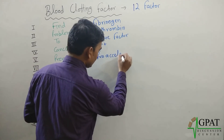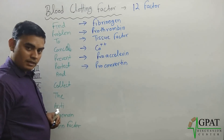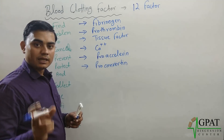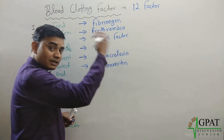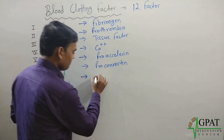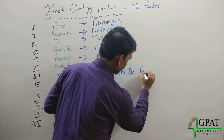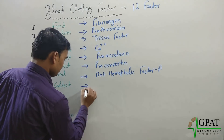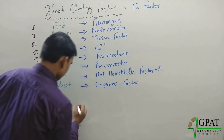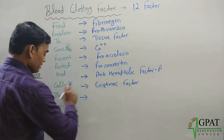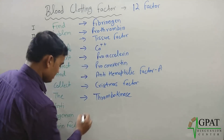The two P's in 'Prevent' and 'Protect' stand for Pro-accelerating and Pro-converting factors. Note: A comes before C alphabetically, so Pro-accelerating (Factor V) comes before Pro-converting (Factor VII). Then 'Collect' gives us: C for Anti-Hemophilic Factor A (Factor VIII), C for Christmas Factor (Factor IX), and T for Thrombokinase (Factor X), also known as Stuart factor.